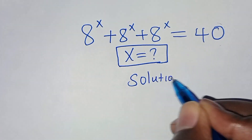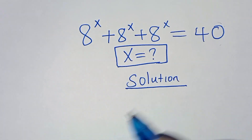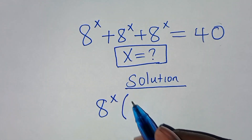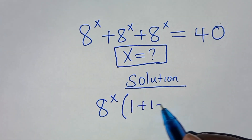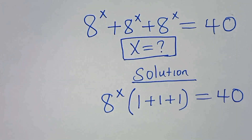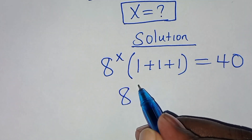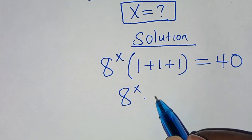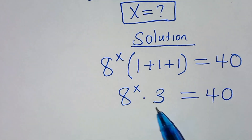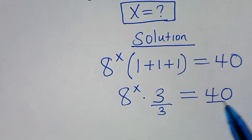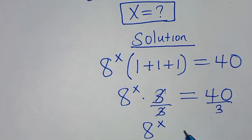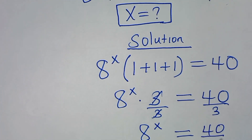Now let's provide the solution. 8 to the power x is common here, so we can factor out 8 to the power x into the brackets. Inside the brackets we have 1 plus 1 plus 1, and this is equal to 40. So this implies we have 8 to the power x multiplied by 3, which is equal to 40. Dividing both sides by 3, we get 8 to the power x equals 40 over 3.